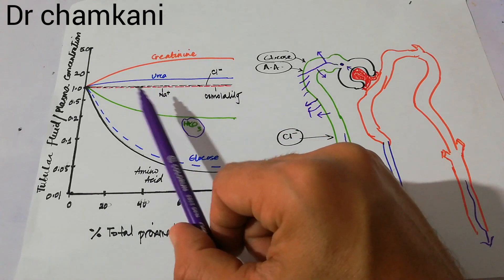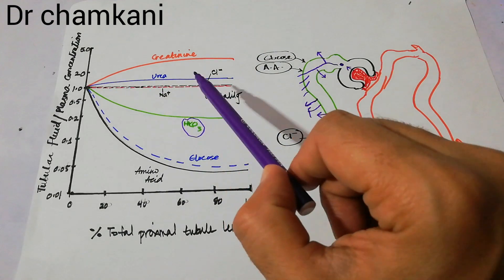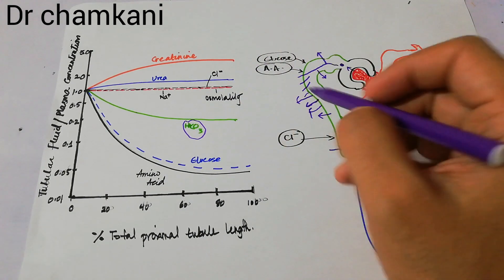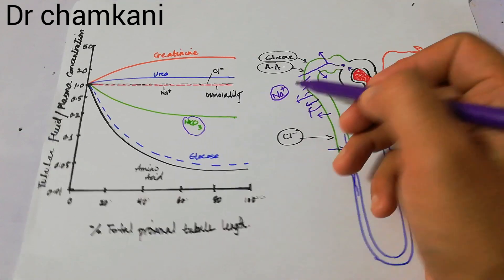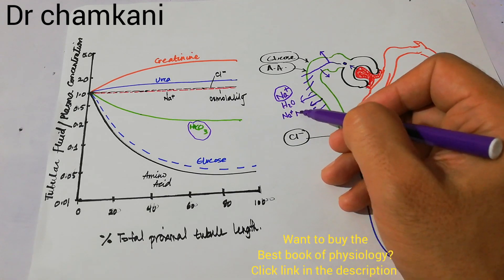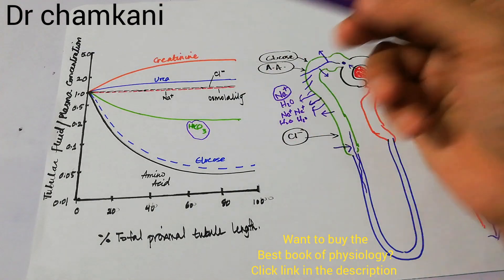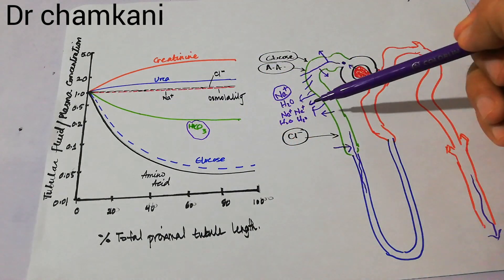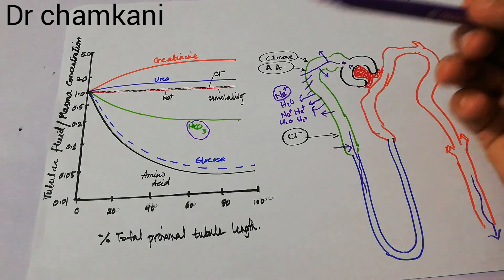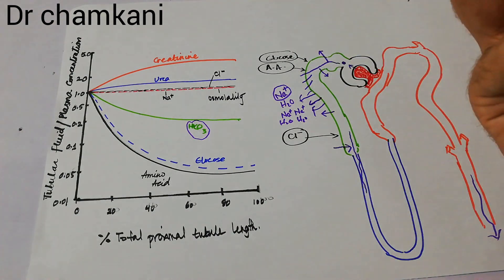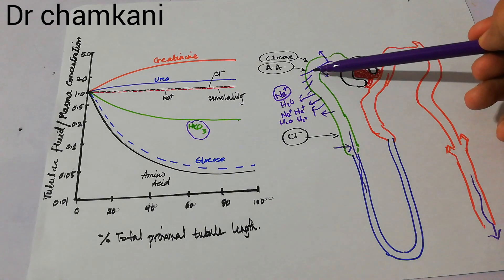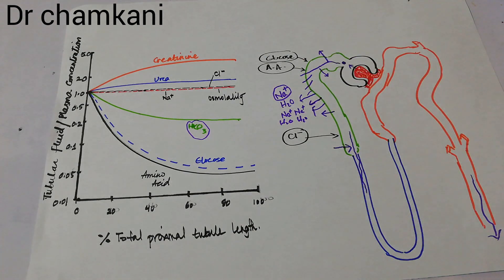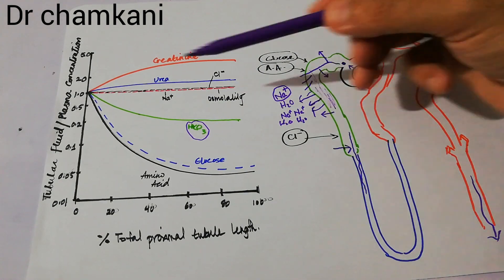If you look at the concentration of sodium, its concentration throughout the tubule remains the same. This is because as soon as sodium is reabsorbed, water is also reabsorbed in proportion to the amount of sodium reabsorbed. If one sodium ion is absorbed, the same amount of water is reabsorbed. So the concentration remains the same. The amount of sodium may decrease but its concentration does not decrease because it is followed by water. In the case of amino acids and glucose they are not followed by water, so their amount and concentration both decrease. But sodium and chloride are followed by water, so their concentration in the tubule remains the same — that's why they stay at level 1.